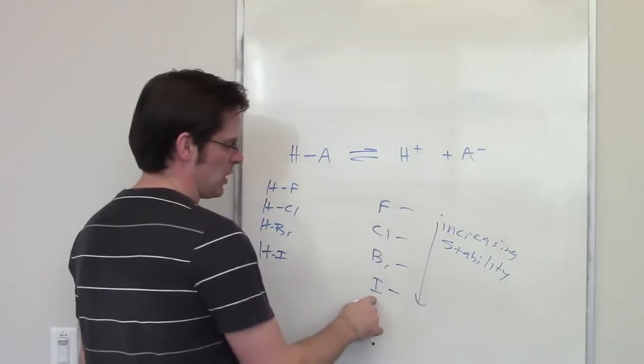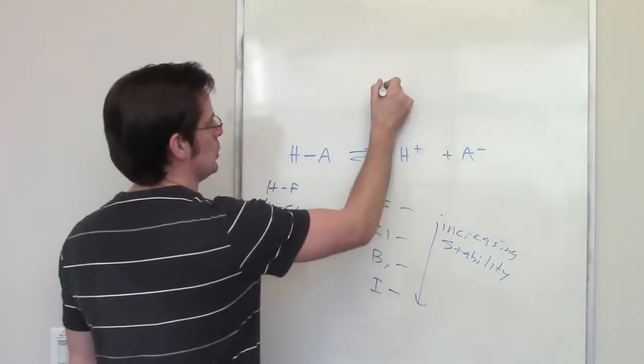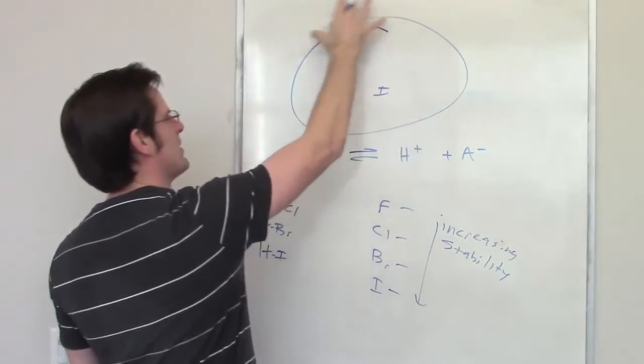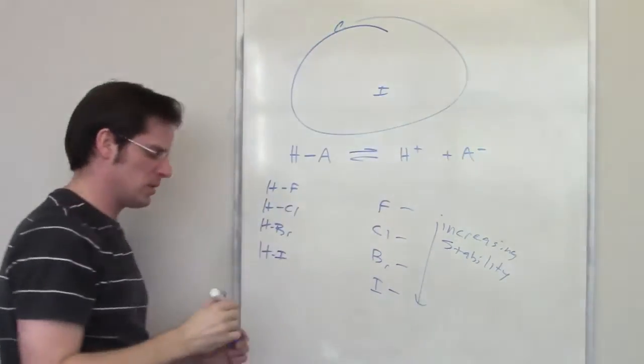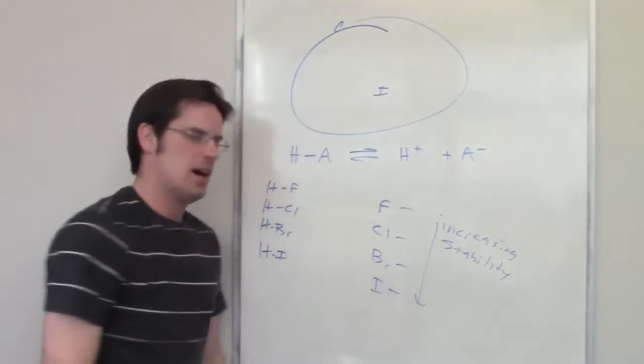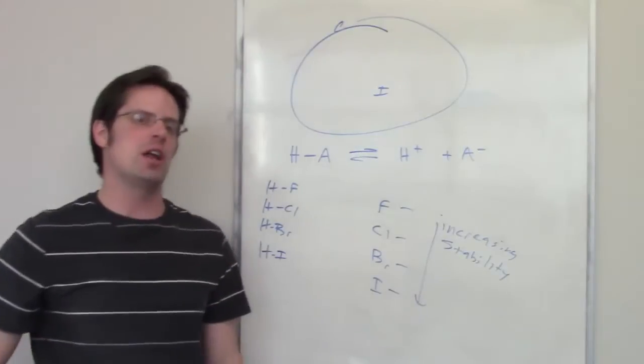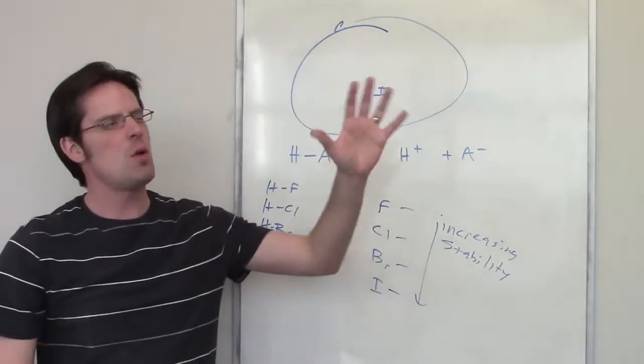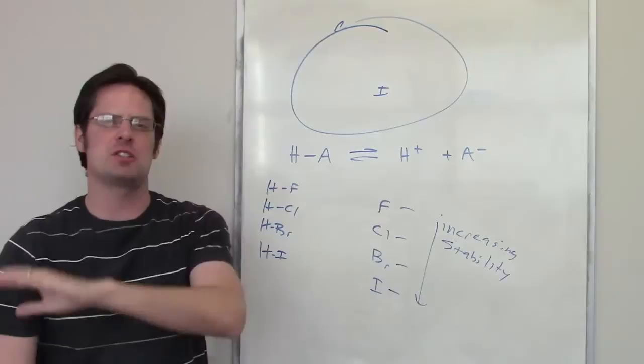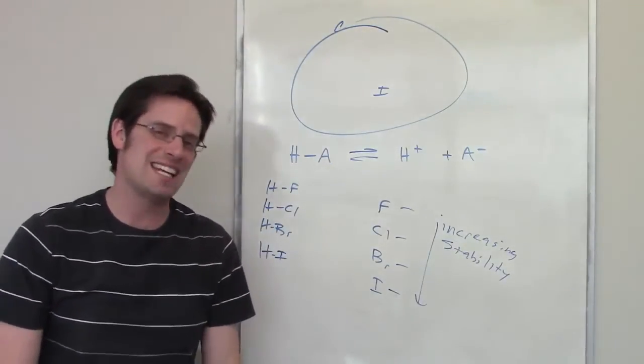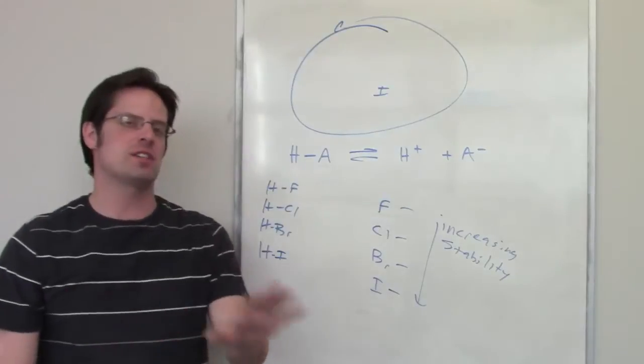If I take an electron and put it on an I-, I- is huge. I'm spreading that electron all around the outer surface of the outermost orbitals of iodine. Iodine hardly feels it. It's like spreading an electron across a beach ball. So much surface area, that electron can spread across it, the iodine can hardly even feel it. So, iodide, I-, very stable.